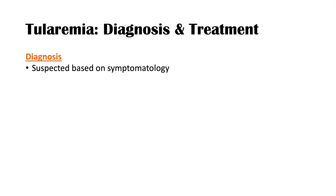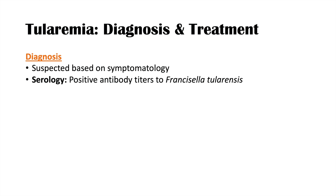Diagnosis of tularemia is often suspected based on symptomatology and risk factors. For example, a skin ulcer with regional lymphadenopathy and relevant risk factors should raise suspicion. More specifically, we can diagnose tularemia with serology testing — looking for positive antibody titers to Francisella tularensis — bacterial culture (though this bacteria is very difficult to culture), and newer PCR testing to assess whether the bacteria is present.